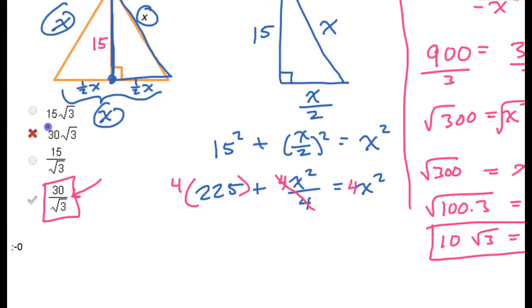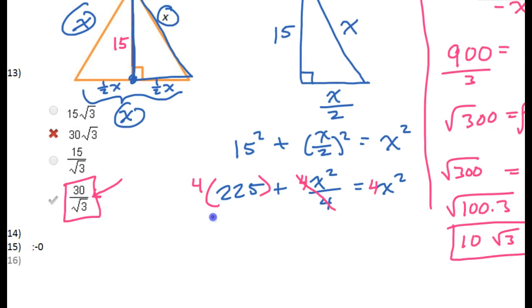Now, of course, I look over and I see that none of these say 10 radical 3. But yet one of them has to be equivalent to 10 radical 3. Well, notice that the first two answers have a radical 3 right there. So there's no way that 15 radical 3 is the same thing as 10 radical 3. So I can throw that out. There's no way that 30 radical 3 is the same thing as 10 radical 3. So I can throw that out. So it's just between these two.